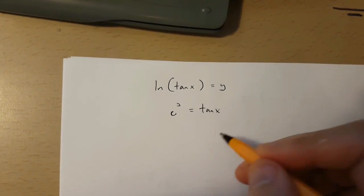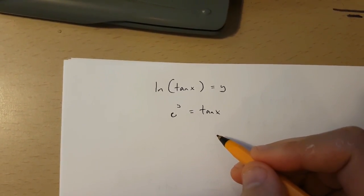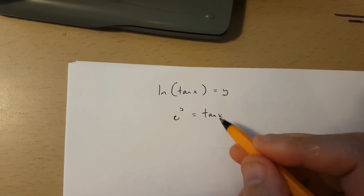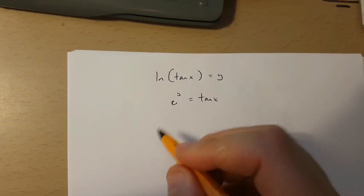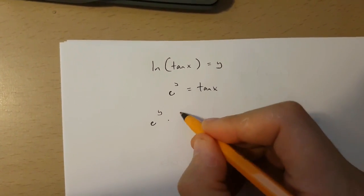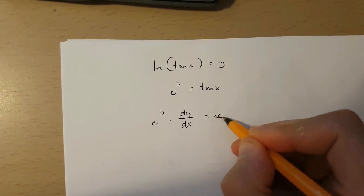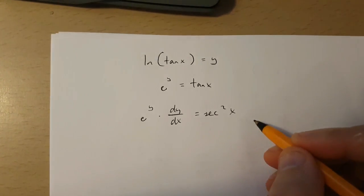Now because I've got this, I can use implicit differentiation to find dy over dx. If I use implicit differentiation, I'm going to get e to the power of y times dy over dx is equal to sec x squared.